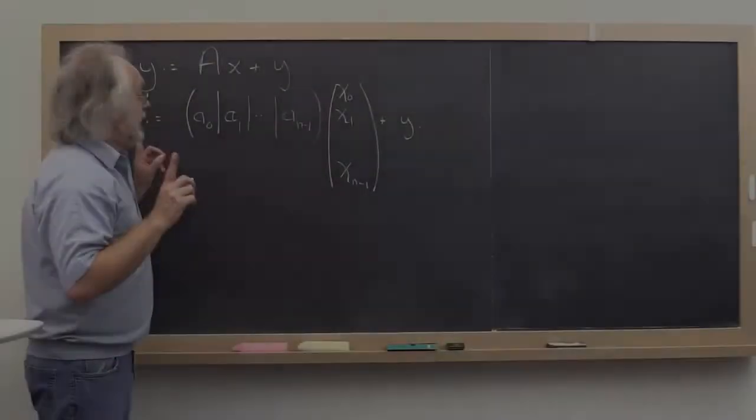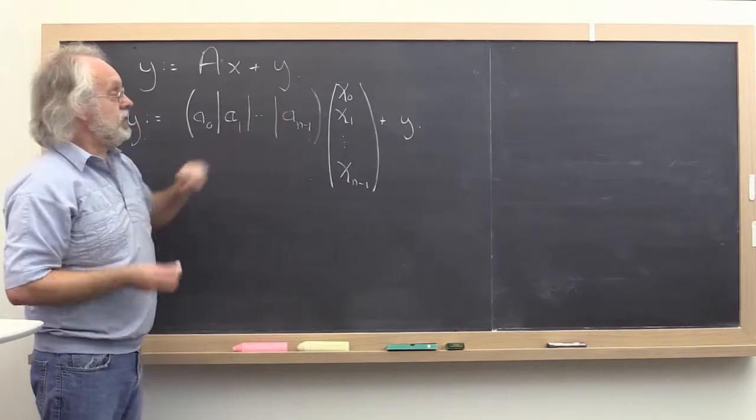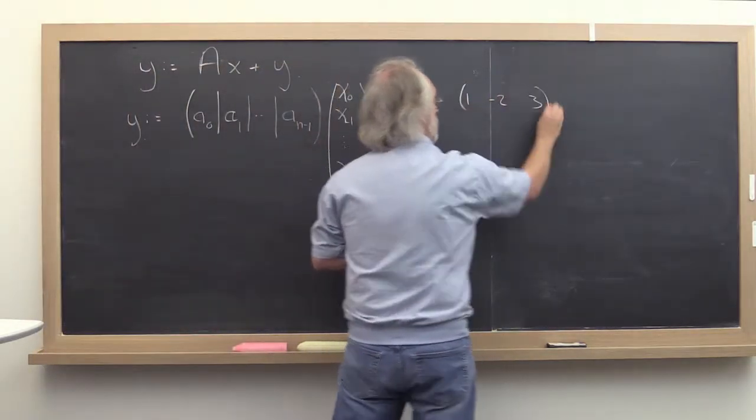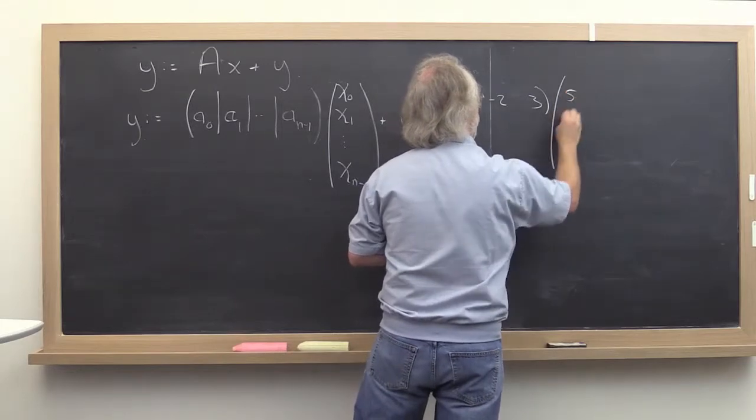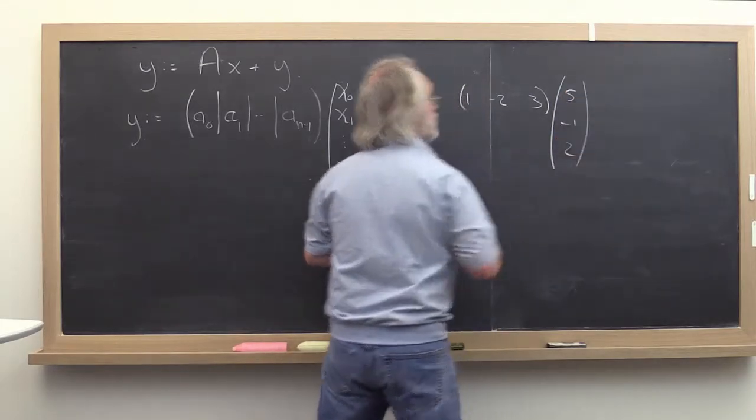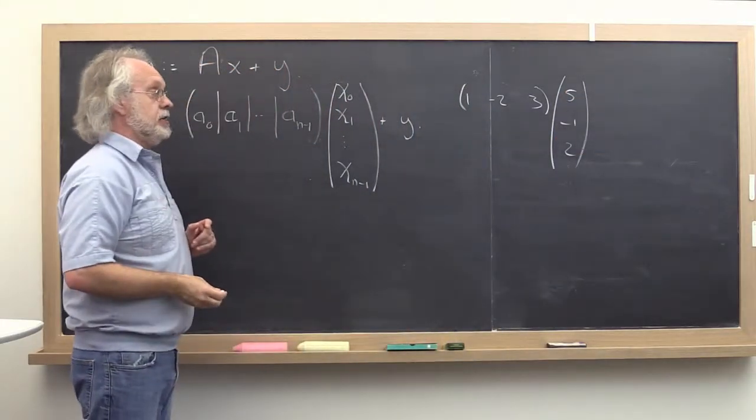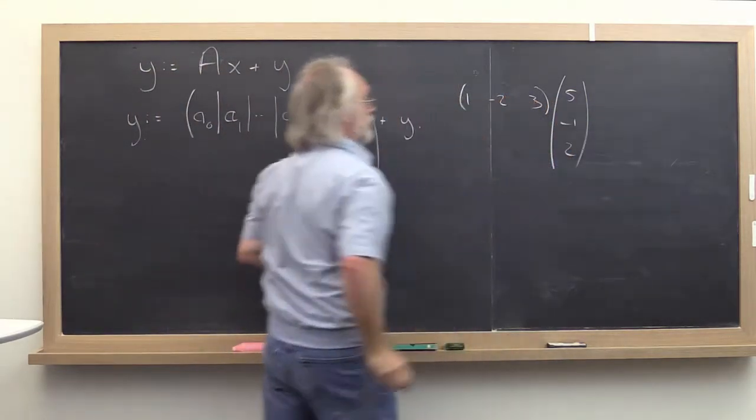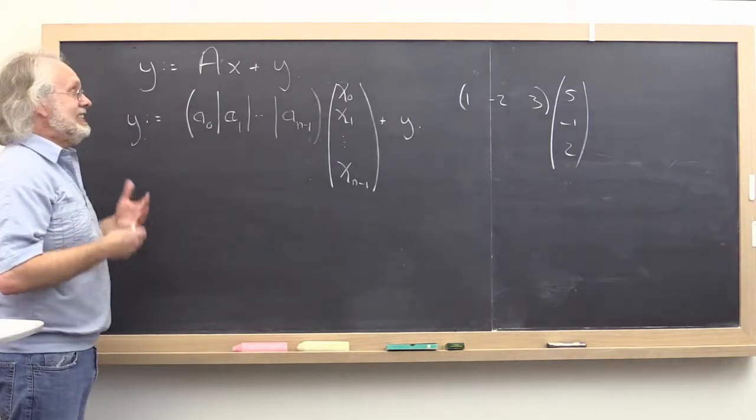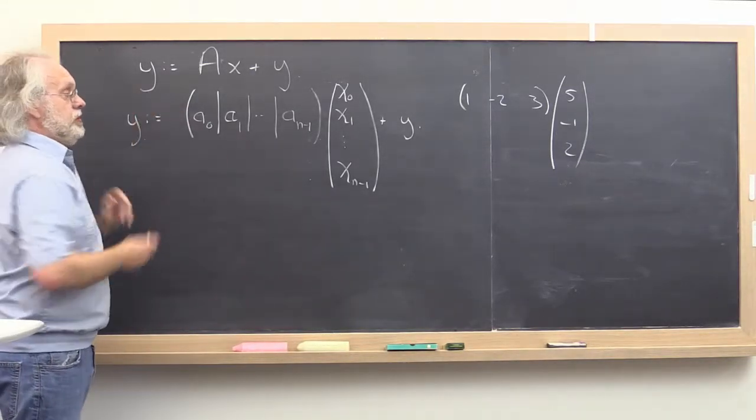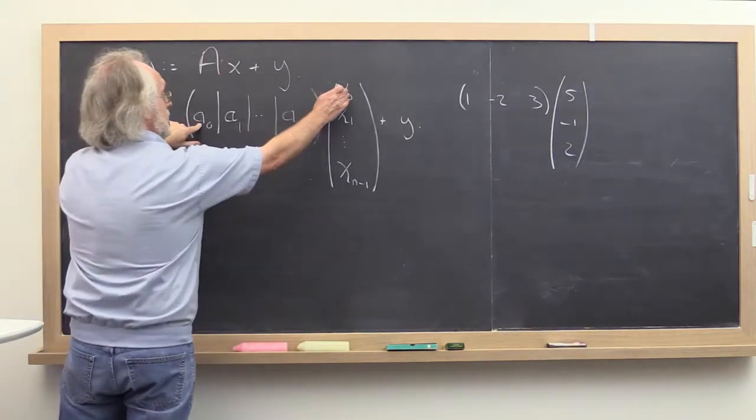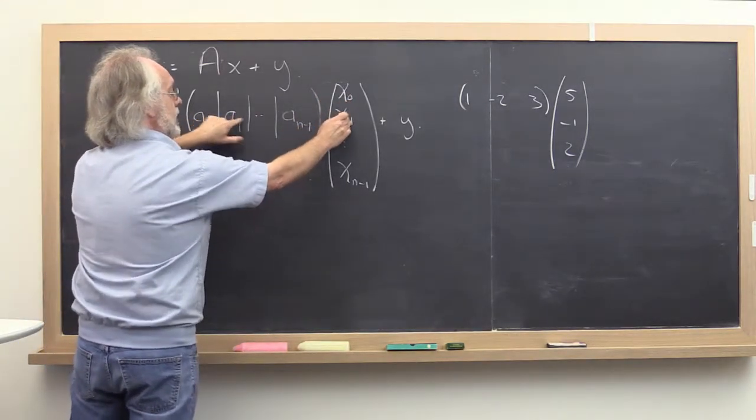Now let's look at this. If these were just numbers, if this was just a row times a column, then you would recognize this as a dot product and you would do this times that plus this times that plus this times that plus this times that. It turns out that the exact same principle applies here. We need to do this column times that scalar plus this column times that scalar, etc.